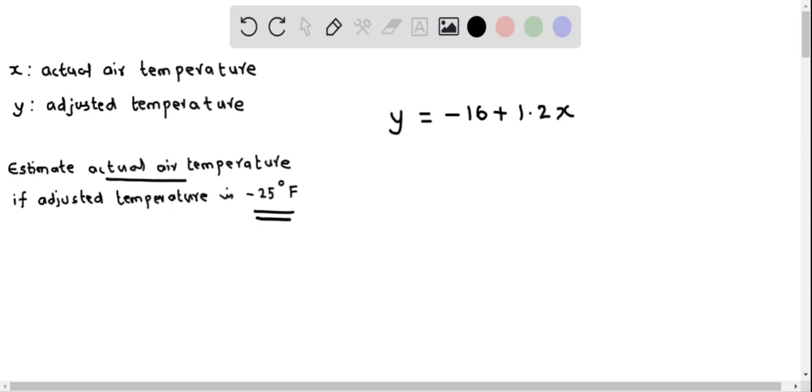We have to determine X from this equation when Y equals negative 25. I am going to replace Y equals negative 25. This equals negative 16 plus 1.2X. Now we have to solve for X, which represents the actual temperature.